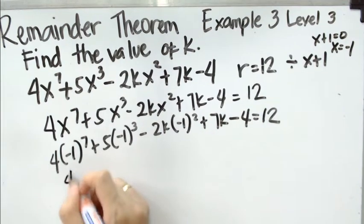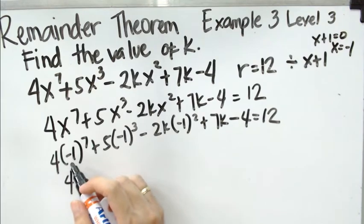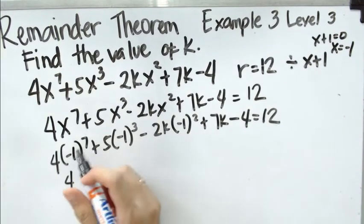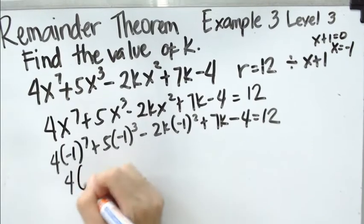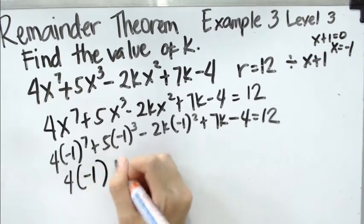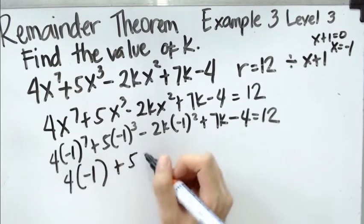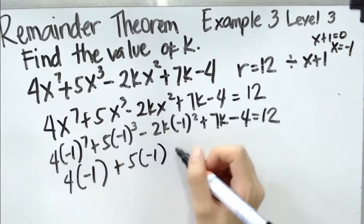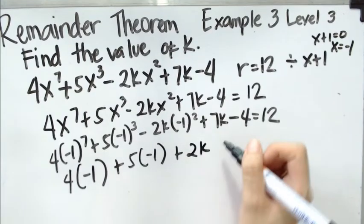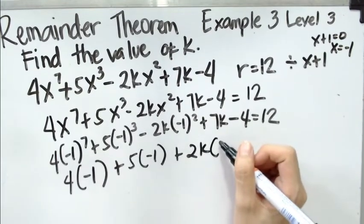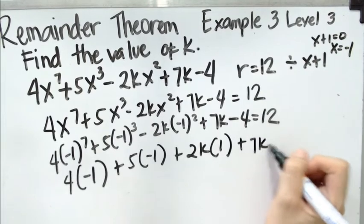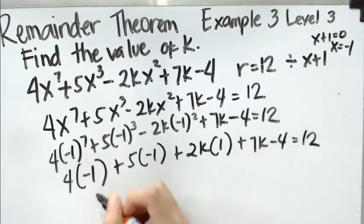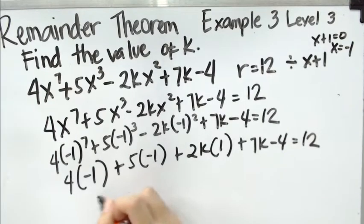And then we solve. 4 times negative 1 raised to 7, where 7 is an odd number, gives us negative 1. Plus, the same goes here: 5 times negative 1 raised to 3 is still negative 1. Minus 2k times negative 1 squared, which is positive 1, plus 7k minus 4 equals 12.